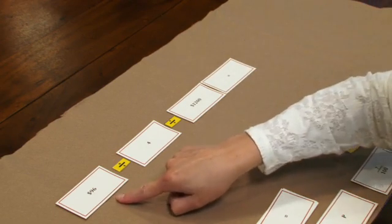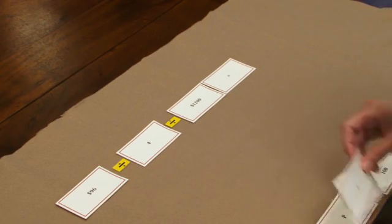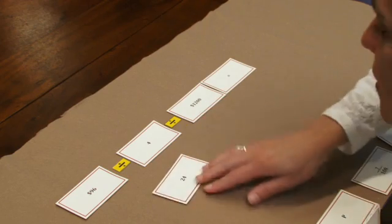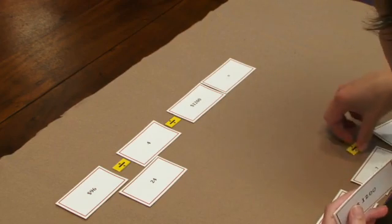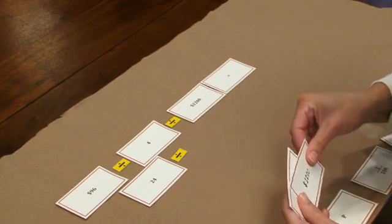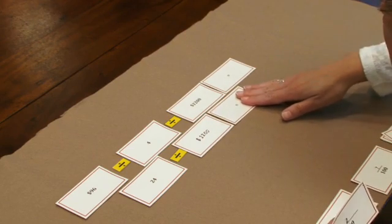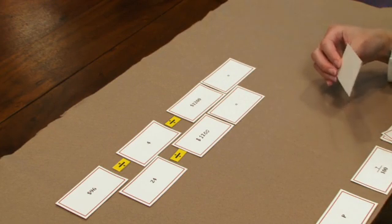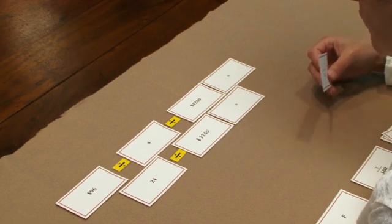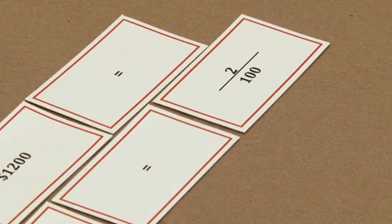So we can start by taking 96 and dividing that by four. And the students get 24, and then we'll take 24 and we'll divide that by 1,200. The students can take that and solve that as a fraction, 24 divided by 1,200. And when they reduce it, we have 2 one-hundredths, and that is our rate.